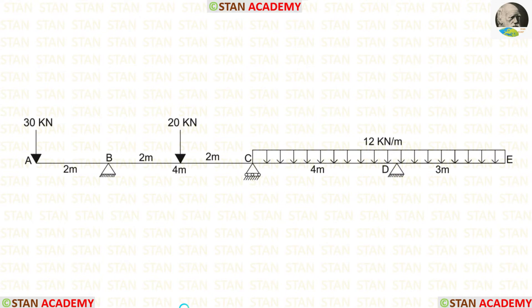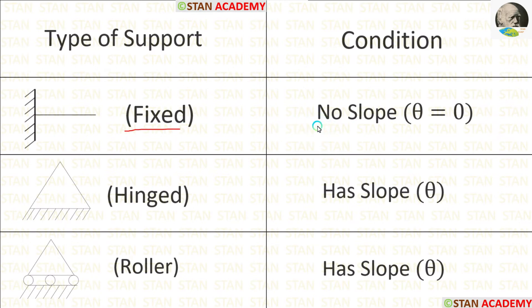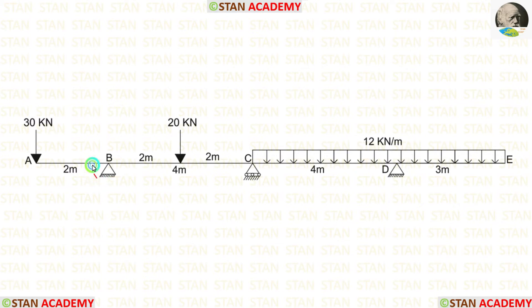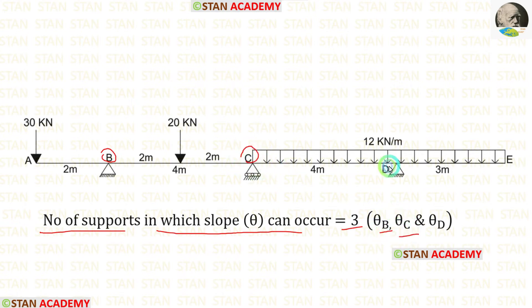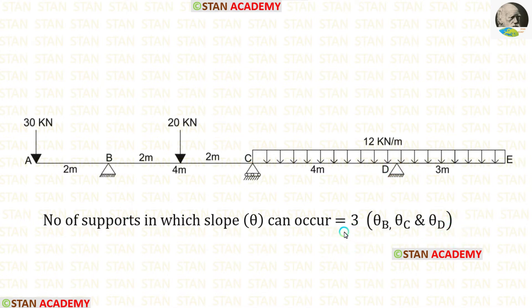In the slope deflection method, we check the number of supports where slope can occur. In a fixed support, there is no slope. In a hinged support, there is no slope. In a roller support, there is no slope. In this beam, points B and D have hinged supports and point C has a roller support. So there are three unknowns: theta B, theta C, and theta D.